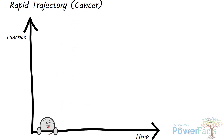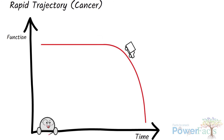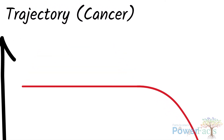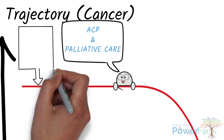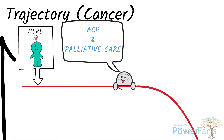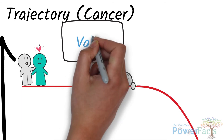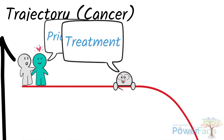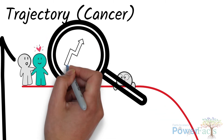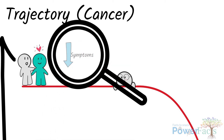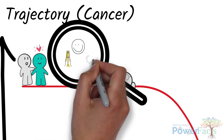1. Rapid trajectory, which usually happens in cancer. It is characterised by a fast physical decline towards the last few months of life. As the patient becomes weaker, it also means the illness is developing faster. Ideally, advanced care planning (ACP) and palliative care should start at diagnosis, even when patients are physically well, so that conversations about values, priorities, and treatment options can begin early. The focus is on improving quality of life, reducing symptoms, and preparing patients emotionally, spiritually, and practically.